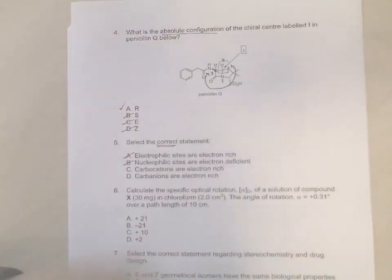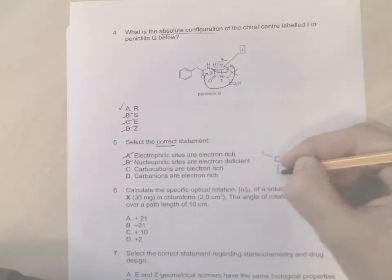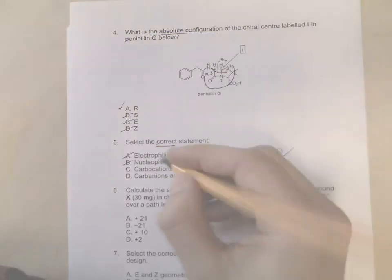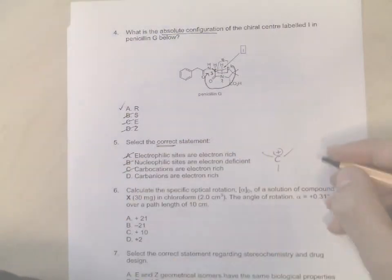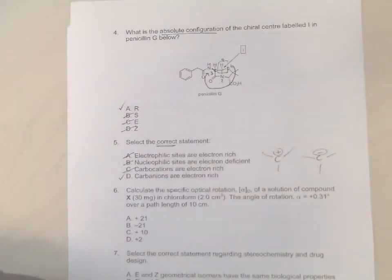And then the opposite is true for nucleophiles. Nucleophiles are electron rich, so they're not electron deficient, so that's wrong. And then if you remember what a carbocation is, a carbocation is a carbon with a positive charge on it, so that is electron deficient because it's a positive charge. So they're not electron rich. And a carbanion is a negatively charged species, so they are electron rich.